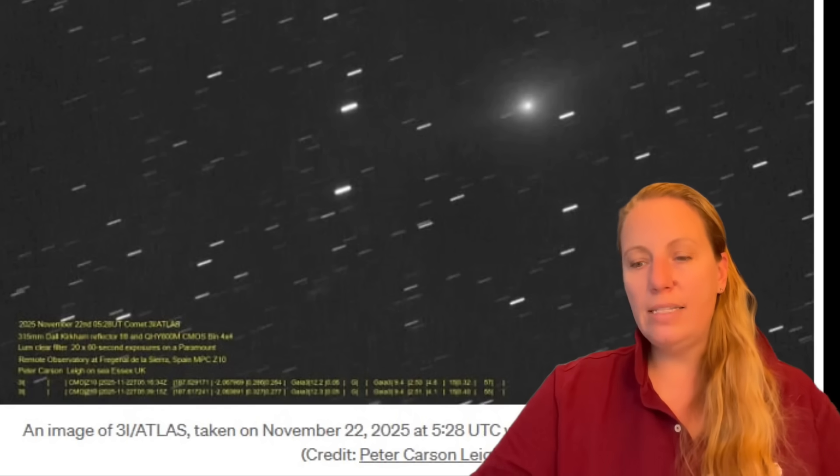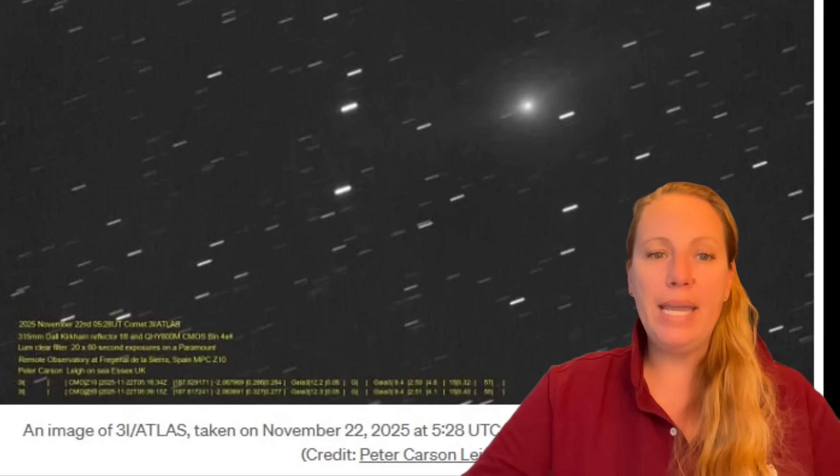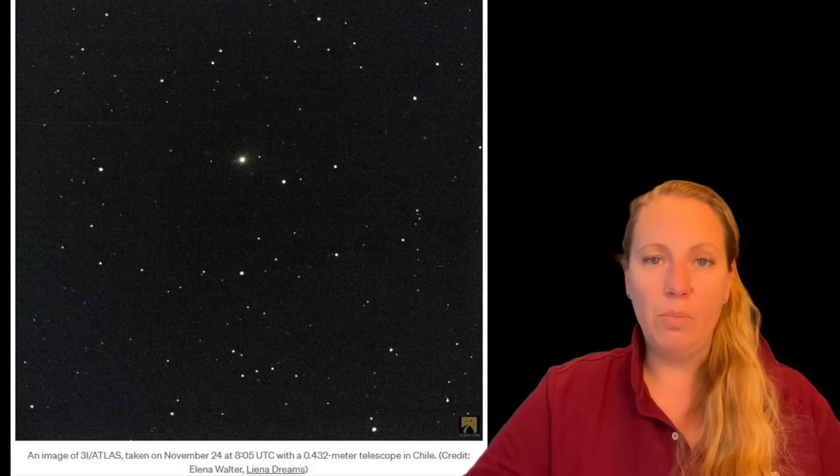So everyone is now waiting for the big moment, is waiting for high resolution images from Earth's biggest telescopes, plus the Hubble and Webb telescopes. The closest approach to Earth will be on December 19th, 2025 at a minimum of 269 million kilometers. So this month will likely decide the true nature of 3i Atlas.